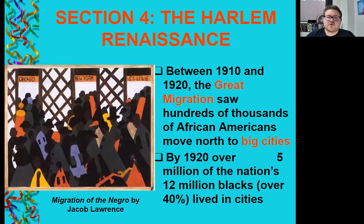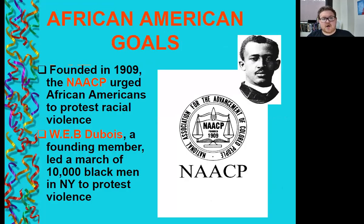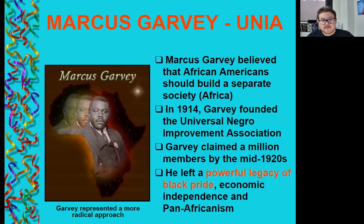The Harlem Renaissance: between 1910 and 1920, the Great Migration saw hundreds of thousands of African Americans move north to big cities from the South. By 1920, over 5 million of the nation's 12 million Black Americans — over 40 percent — lived in cities. Founded in 1909, the NAACP urged African Americans to protest racial violence. W.E.B. Du Bois, a founding member, led a march of 10,000 Black men in New York to protest violence. Marcus Garvey believed African Americans should build a separate society, and in 1914 he founded the Universal Negro Improvement Association, claiming a million members by the mid-1920s. He left a powerful legacy of Black pride, economic independence, and pan-Africanism.